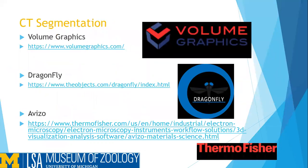We're going to be talking about CT segmentation, and in particular we will be going through three programs: Volume Graphics, Dragonfly, and Abizo. Each of these three segmentation software packages allows you to take 2D cross-sectional data, compile them into 3D models, and do a variety of things with them — including creating landmarks, doing morphometrics, and a whole range of visualizations. I do want to point out that Dragonfly and the company that runs it, called ORS, are creating their own tutorial series covering all steps and advanced functions of Dragonfly, which can be found on their YouTube page by searching 'Dragonfly ORS tutorials.'